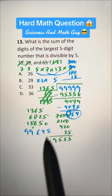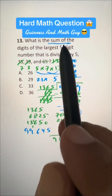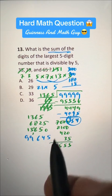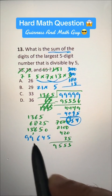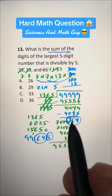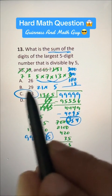We want the digit sum, sum of the digits of this largest number. So, 9 plus 9 is 18, 18 plus this 10 is 28, 28 plus this 5 is 33, that's our answer, choice C.